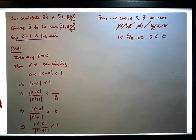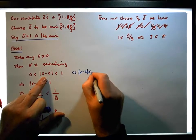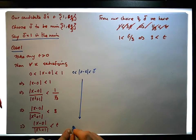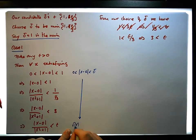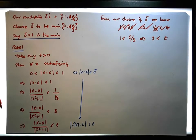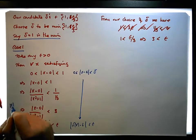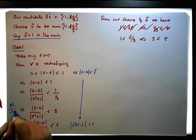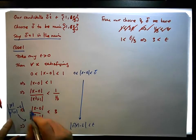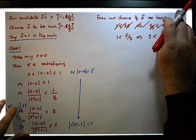What we've done is taken our premise of the form |x minus a| less than delta and reduced it to something of the form |f(x) minus L| less than epsilon. This is the same as the absolute value of x over x squared plus one, minus zero, is less than epsilon.